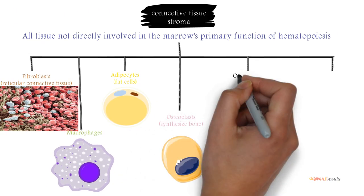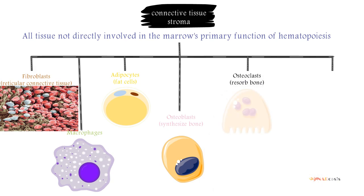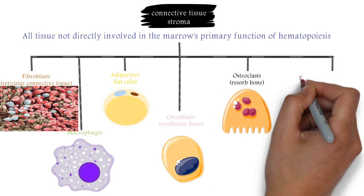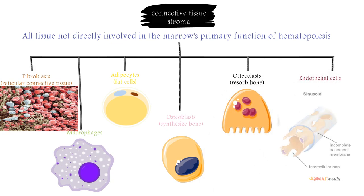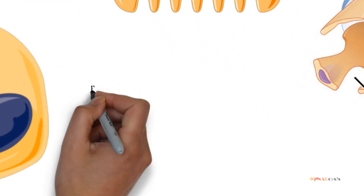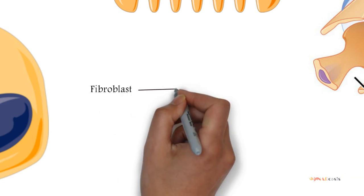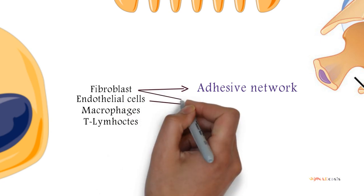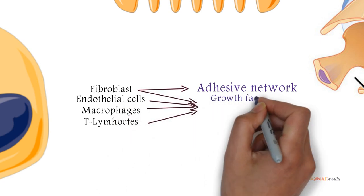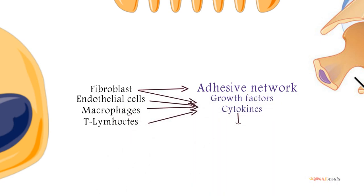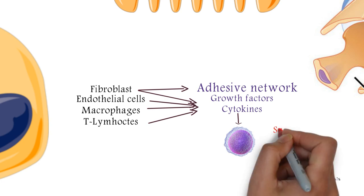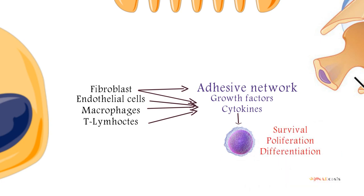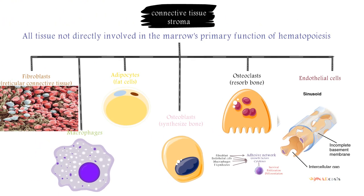So the fibroblastoid cells give the adhesive network, and with the endothelial cells and macrophages and T-lymphocytes they provide the growth factors and cytokines which are important to the survival and proliferation and differentiation of hematopoietic stem cells.